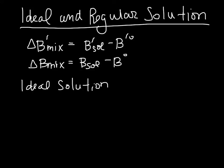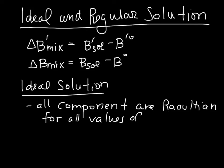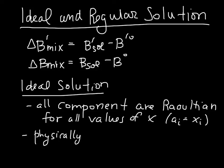We've talked about this several times already, related to the activity and chemical potential. In an ideal solution, all components are Raoultian for all compositions. This means that the activity of i is equal to the composition of i for all values. Physically, what it means for it to be an ideal solution is that all bonds have the same energy — AA, BB, and AB bonds have the same energy.